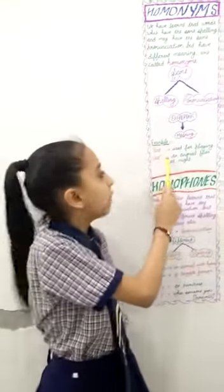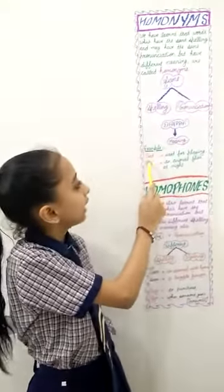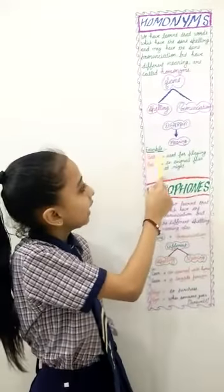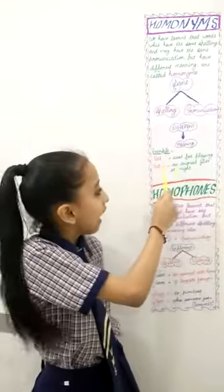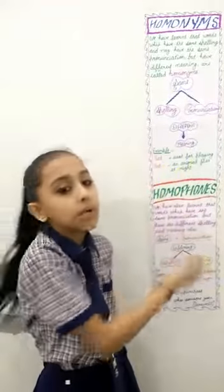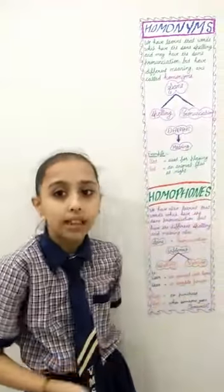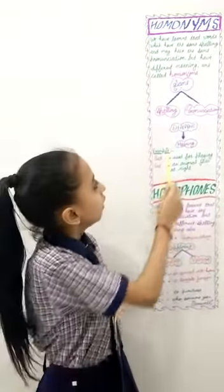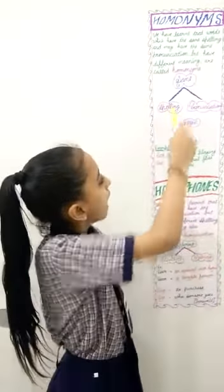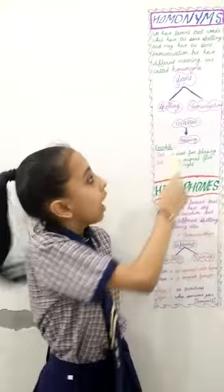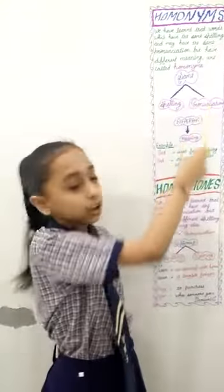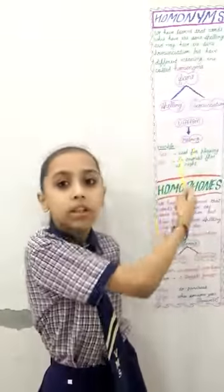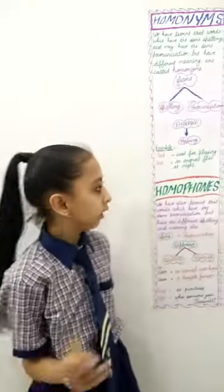I have written one example for you, that is bat. This bat is used for playing, and bat is an animal that flies at night. Look here — spelling is same and pronunciation is also same, but meaning is different.